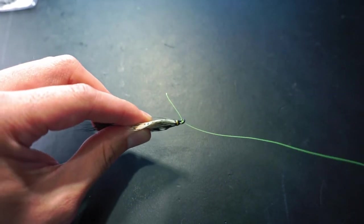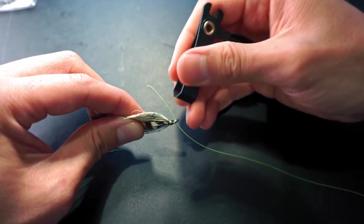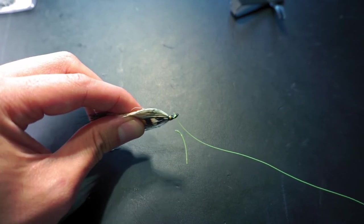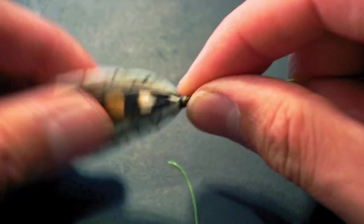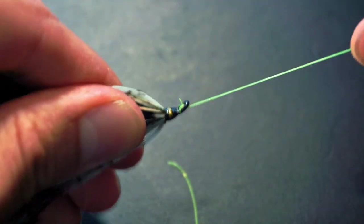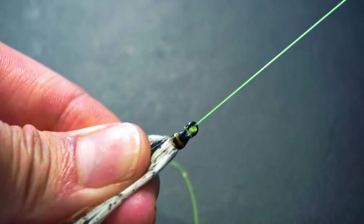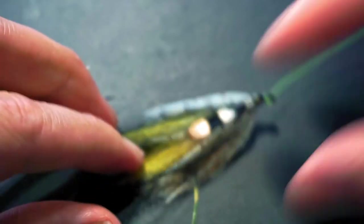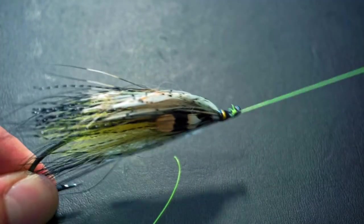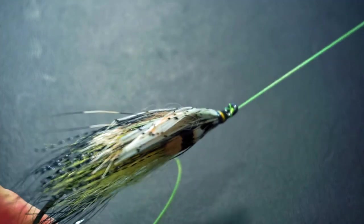There we go. Cut the tag end and check that the leader really comes out straight under the eye of the hook. That looks good enough.